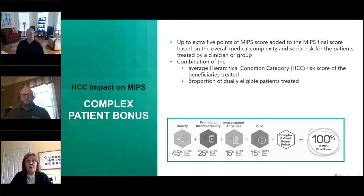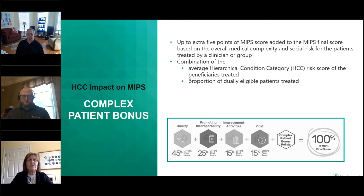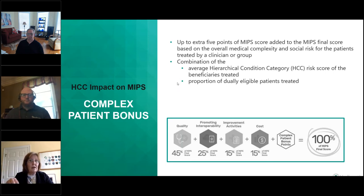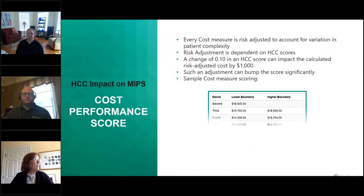So it's super important if you're interested in those points. The average provider will get the average score, which is two and a half points. While this is up to an extra five points, CMS has proposed and is strongly advocating moving that up to 10 extra points for 2020 in the 2021 proposed rule — you can get an extra 10 points for treating complex patients because of all the extra effort and changes needed to support COVID patients.